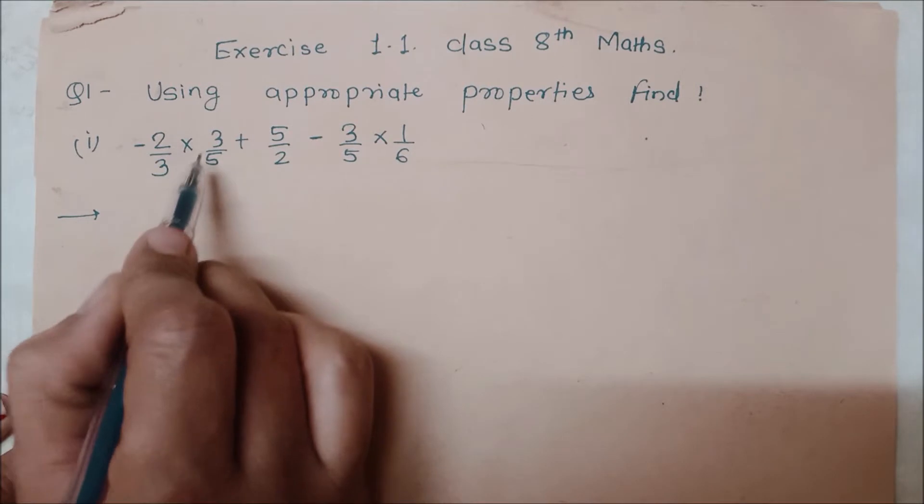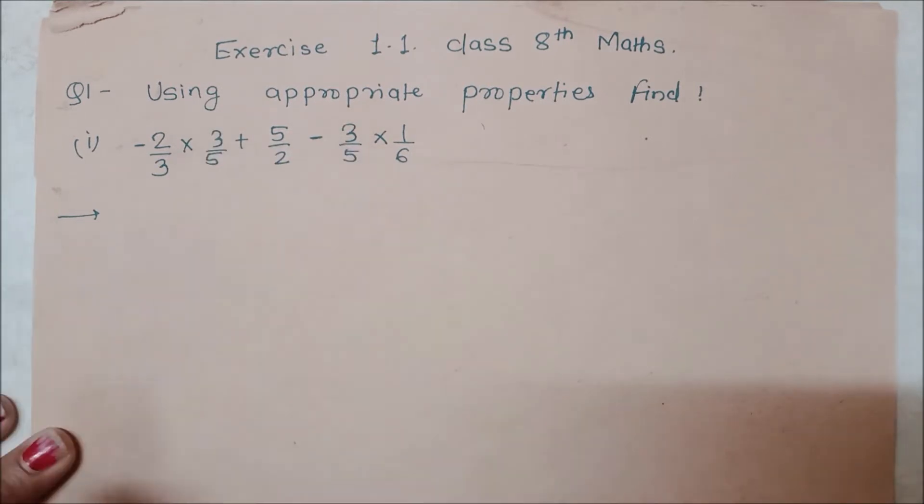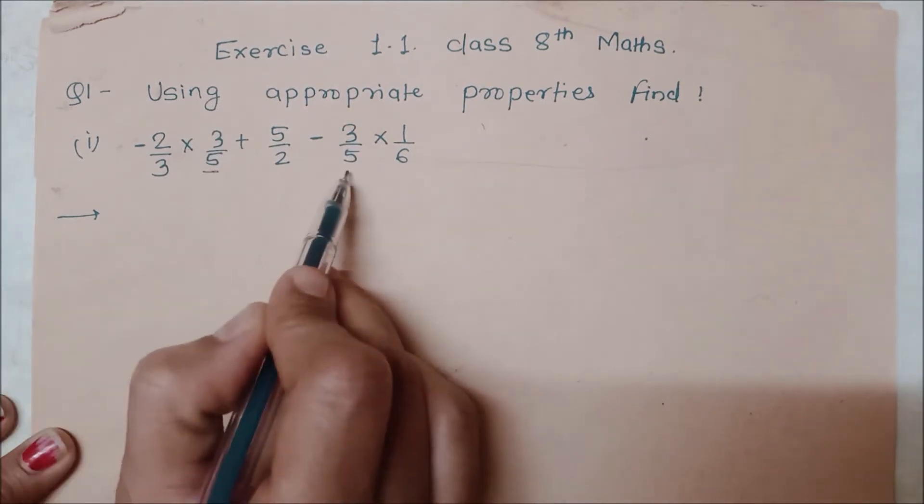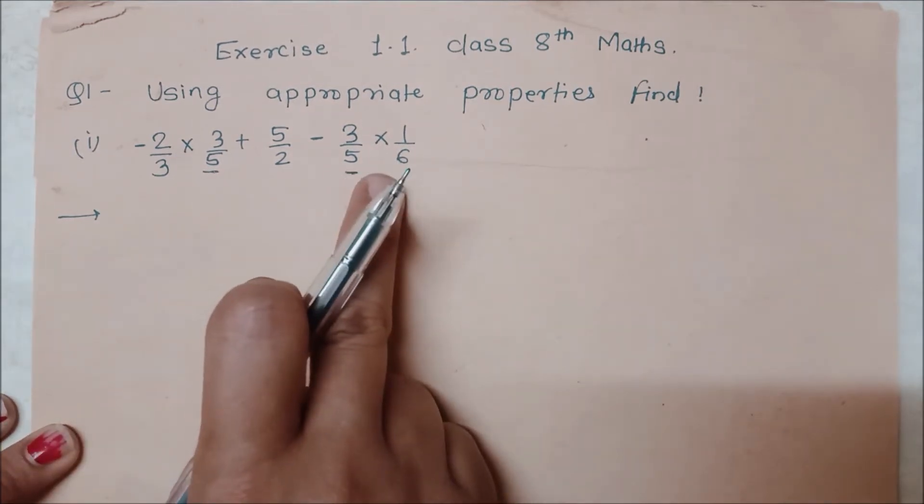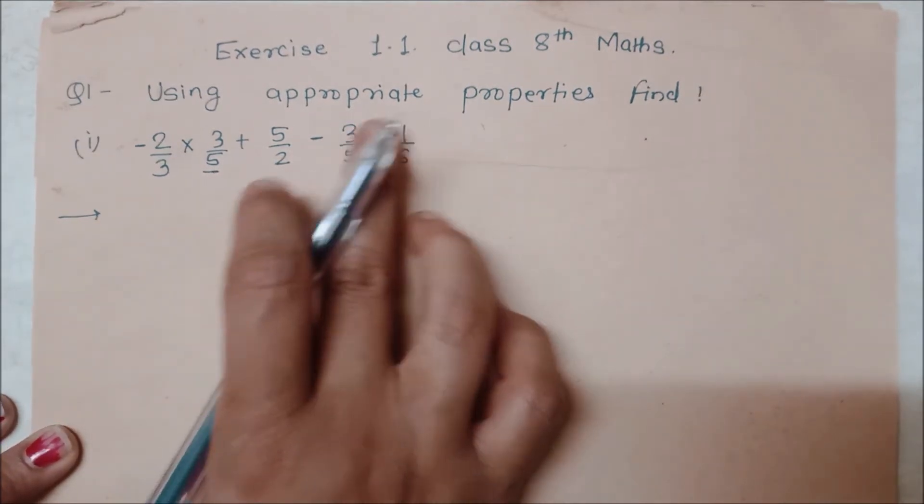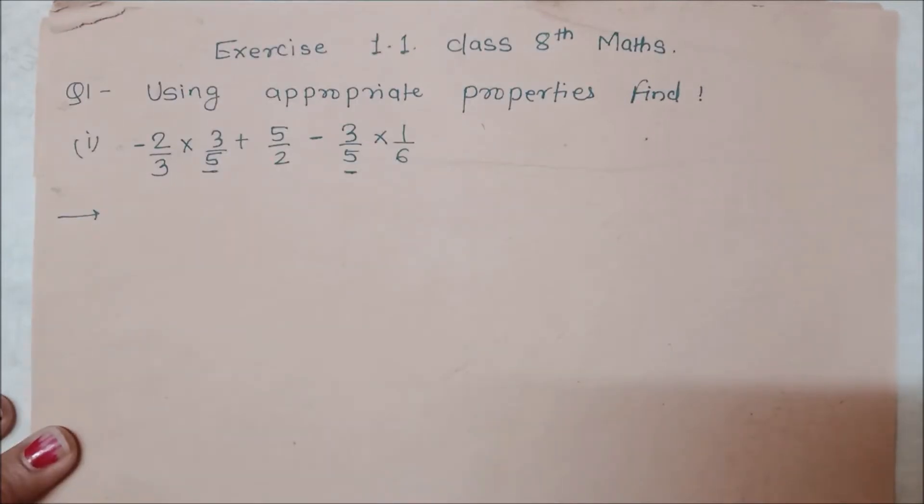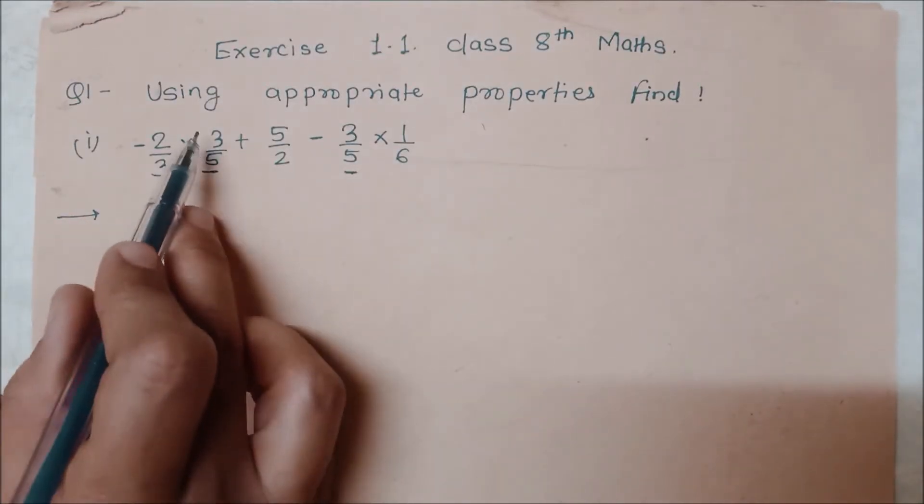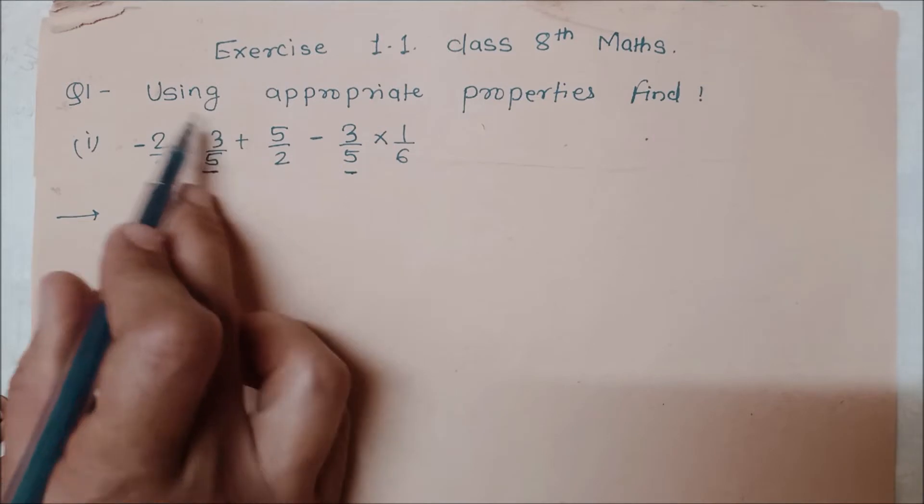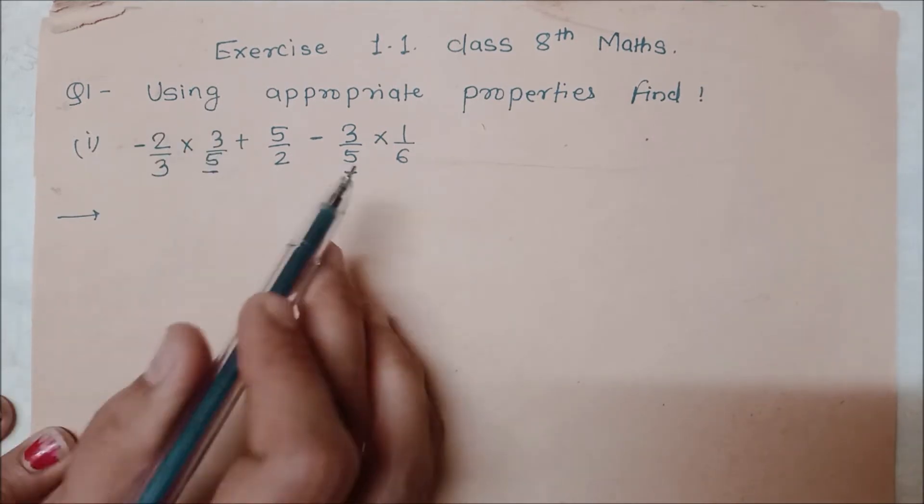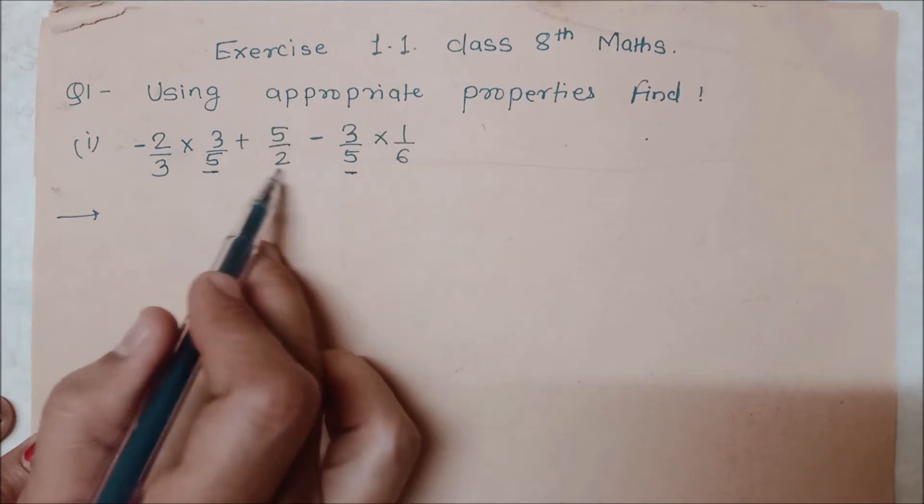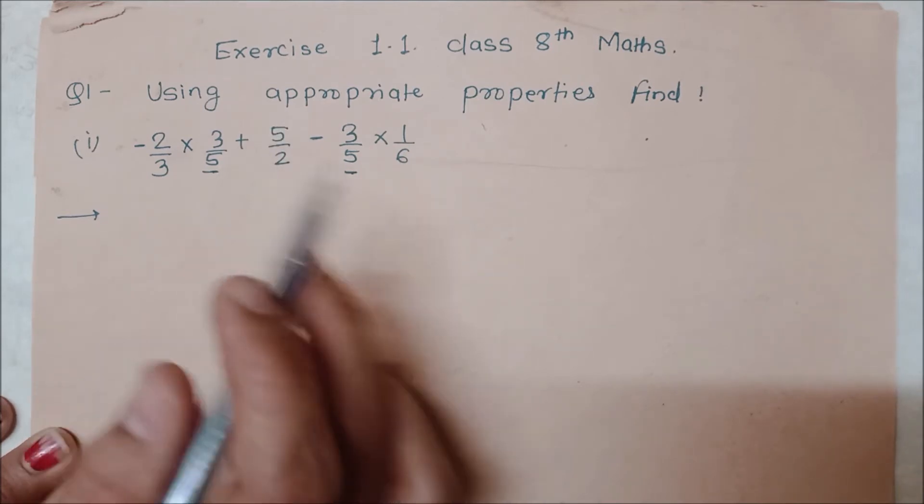First of all we will see what is the common term. 3 by 5, this is also 3 by 5. Now we can say this 3 by 5 is the family because it is multiplied, it means that it is one family. Here it is also the same thing, 3 by 5 is multiplied, this is also a family. Now what do we do? We take the terms of 3 by 5 together.